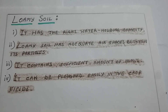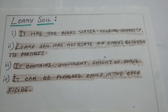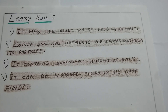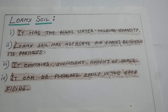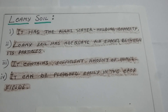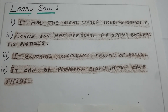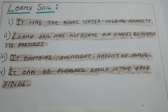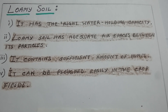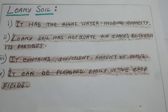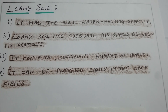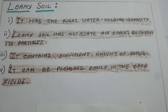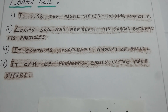Loam soil has the right water holding capacity necessary for the growth of plants due to the presence of clay in it. It has adequate air spaces between its particles to hold sufficient air needed by the roots of plants due to the presence of sand. Loam soil contains sufficient humus to provide necessary nutrients for growing plants and can be ploughed easily in crop fields.